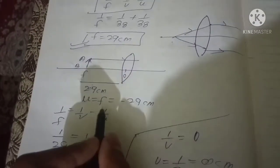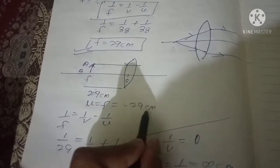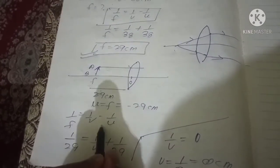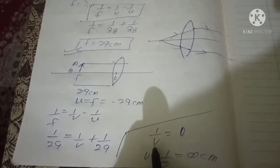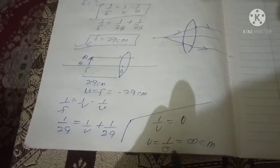Or we can numerically solve it. Like U is here minus 29. Again we are using lens formula and we know from the previous calculation F is 29. So if you solve it you will get 1 over V is equal to 0, or V is equal to 1 over 0, that is infinite.